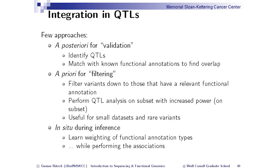A third approach — let's call it in situ — uses functional annotation during the inference adaptively. You learn a rating for different annotation types, and while performing the associations, you keep annotations that you know have an effect and remove annotations that have never been seen to have an effect. This has been proposed by Joe Pickrell recently. So something we know has an effect we keep in; something we've never seen as an effect we remove.